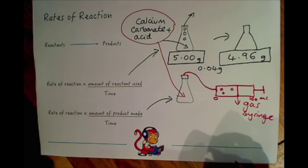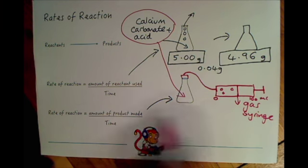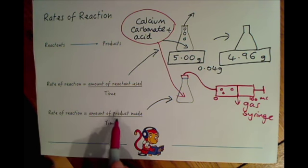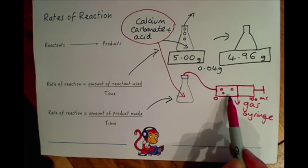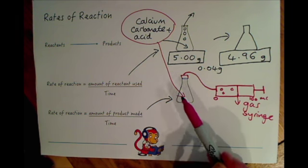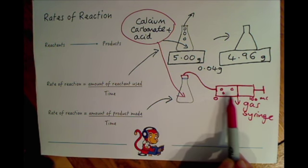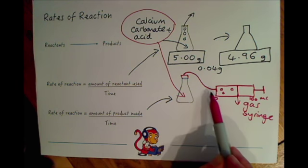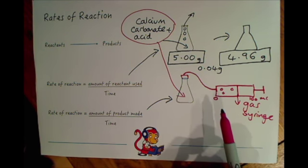If you were to time this, you can use this value to work out the rate of reaction, because rate of reaction equals the amount of product made over time. We could look at the amount of gas produced over time. Obviously a fast rate of reaction will produce a lot of gas in a given time, whereas a slow rate of reaction wouldn't produce very much gas over time.